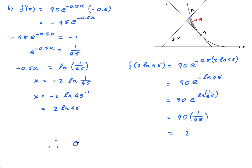Therefore, the coordinates of Q are 2 ln of 45, comma 2. The x-coordinate is 2 ln of 45, and the y-coordinate is 2.